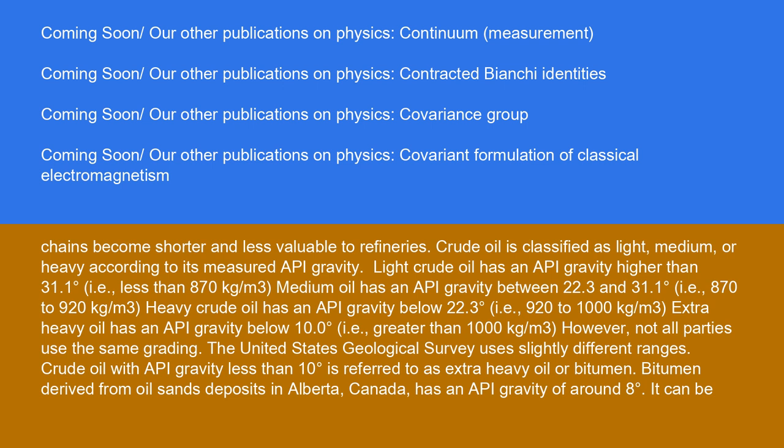Heavy crude oil has an API gravity below 22.3 degrees, i.e. 920 to 1,000 kg per cubic meter. Extra heavy oil has an API gravity below 10.0 degrees, i.e. greater than 1,000 kg per cubic meter.